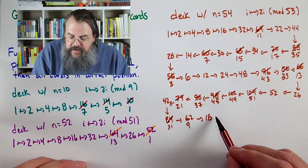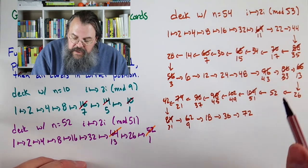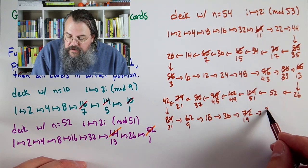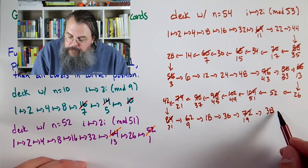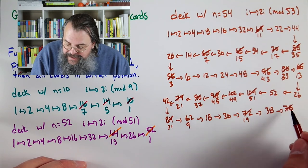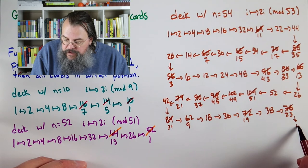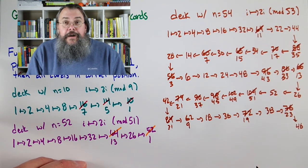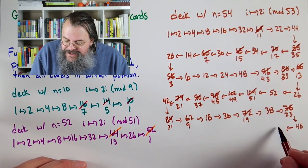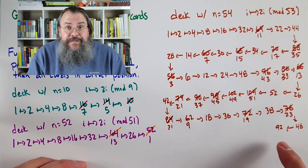So a deck with 54 cards. We threw our jokers in. And so our rule, i goes to 2i, and again mod 53. So any time we get a number bigger than 53, subtract 53 from it. Last warning before we start, if you want to do this yourself, you should pause here, carry it out, and then you can come back and check. Otherwise let's begin. And we're going to go at pace here because there's a lot to do. I've done this before. Here we go.